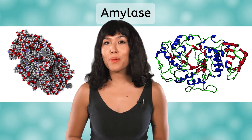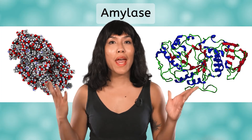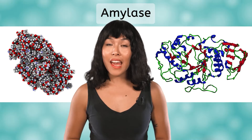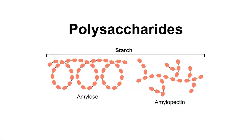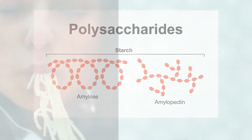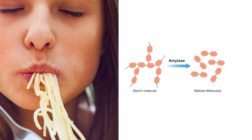Another example is amylase, which is present in our saliva. Both of these models show amylase, one in atom form and the other in ribbon form. Amylase helps break down starch. Remember that starch is a carbohydrate, specifically a polysaccharide that plants make by linking lots of glucose rings together. Starch has two components with different structures, amylose and amylopectin, but both are made of glucose rings. Both need to be broken down into simpler sugars before our bodies can use the glucose for energy. As we chew a food containing starch, amylase in our saliva begins breaking the starch down into simple sugars. Those sugars will be further broken down by additional enzymes through the digestive tract.